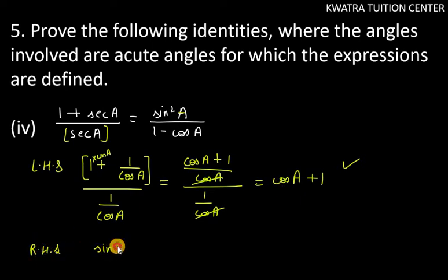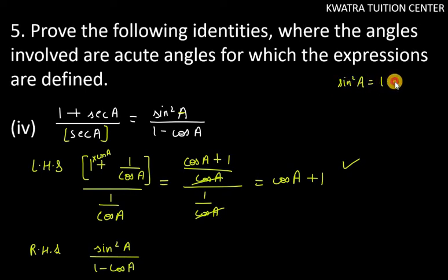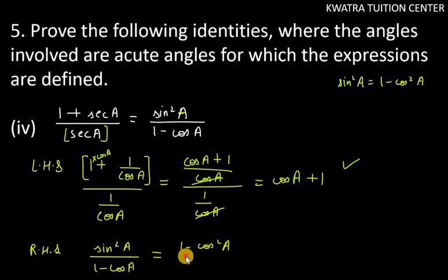We have sin square a, and at the bottom we have 1 minus cos a. So sin square a ko first identity se hame kya likh sakte hai? 1 minus cos square a. So sin square a ko likhte hai 1 minus cos square a, over 1 minus cos a.